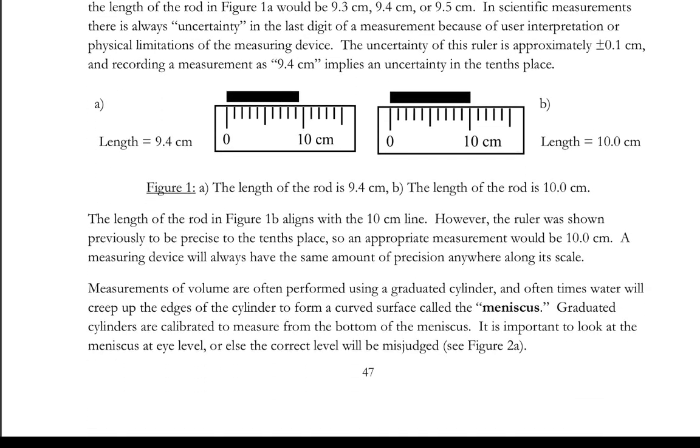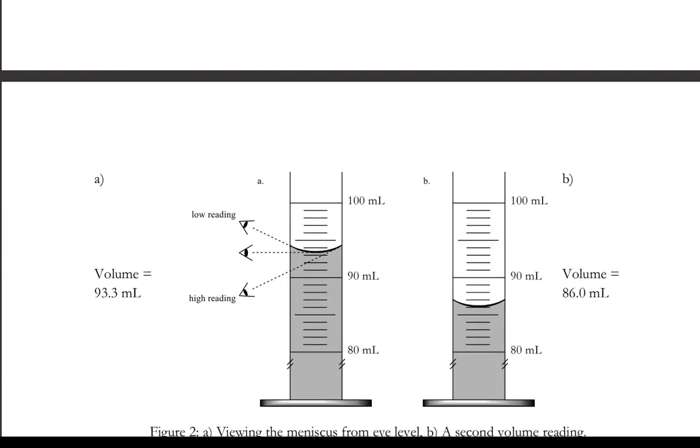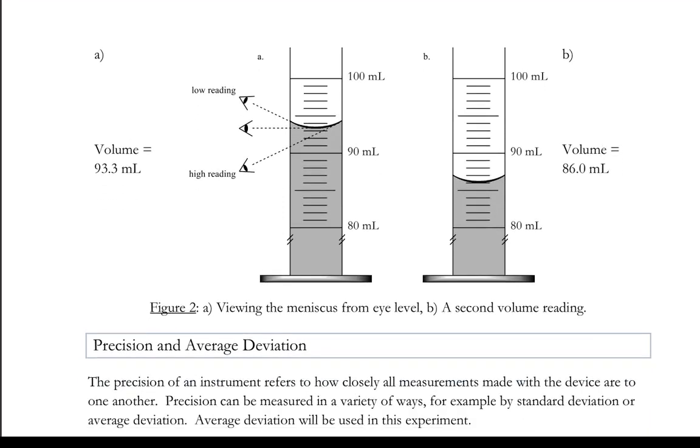Some rulers, like the one that you'll use in the actual experiment, have 10 divisions between those 1 centimeter lines. That means we can report one more decimal, so we need to read the measuring device to the best of its ability.